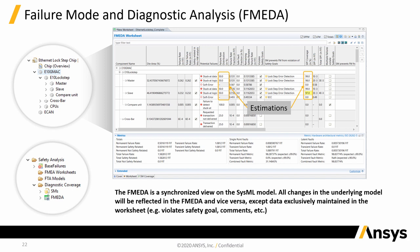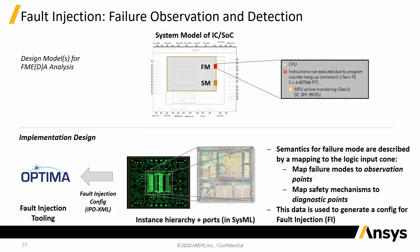An associated and derived FMEDA table gets automatically updated with these data to show not only the die area percentages but also the resulting failure rates of the individual components. Consequently, the single point and latent fault metric calculations are now reflecting the real system much better. Nevertheless, some data may still be based on engineering estimation — for instance, the failure rate distribution to the individual failure modes, and also the coverage of failures by different safety mechanisms, which we start to use here with default values.